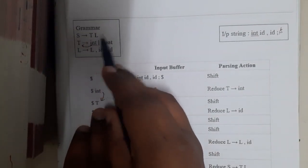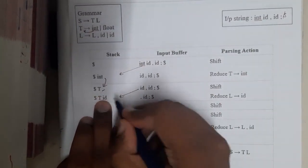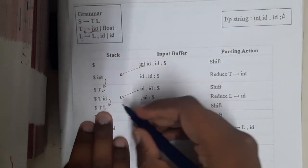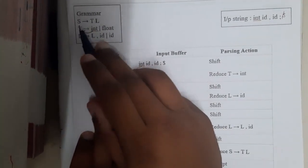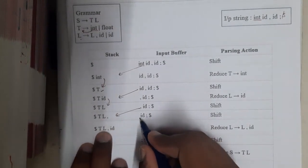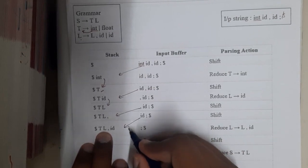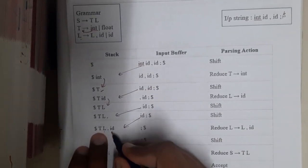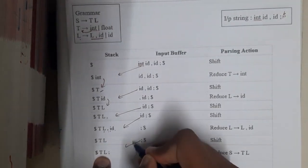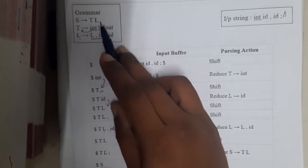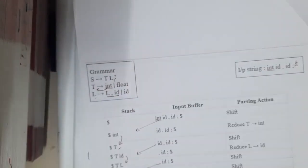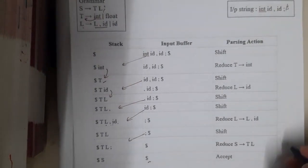T alone cannot be converted further, so we push id. id can be converted to L. Now we have T-L but we wait. We push comma, then another id. L,id can be reduced to L again. Now we have T-L. We push semicolon; T-L-semicolon gives S (note: the grammar should include semicolon to be correct). We get dollar, so the string is accepted.